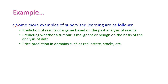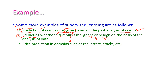Some additional examples of supervised learning: first, prediction of the result of a game based on past analysis of results; second, predicting whether a tumor is malignant or not — malignant means a serious tumor like a brain tumor — we use classification algorithm to predict the seriousness; and third, price prediction, which is very important in domains like real estate or stock exchange, where every second the price changes and we need a powerful algorithm to predict the price of a particular stock.